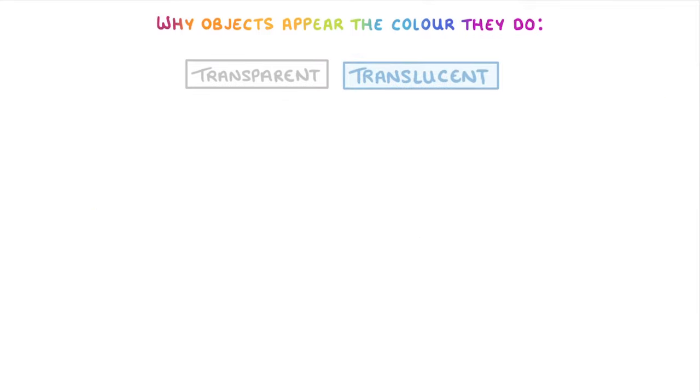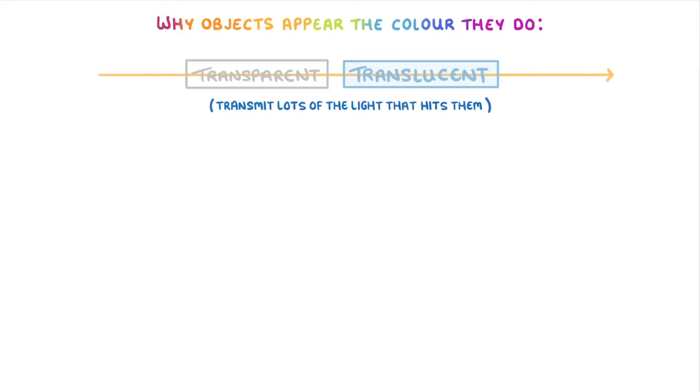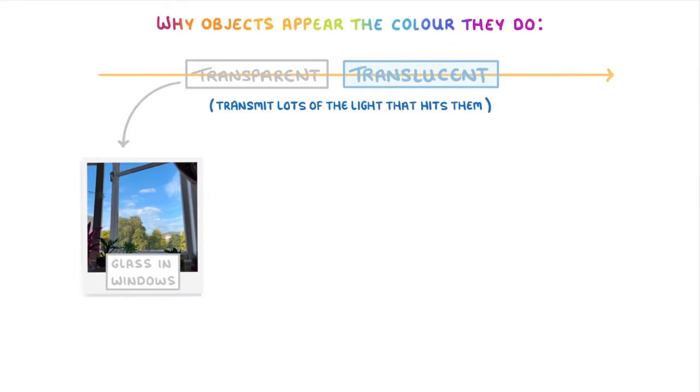Transparent and translucent objects, on the other hand, transmit lots of the light that hits them, which means that it passes straight through. For transparent objects, like the glass in windows, they're almost completely see-through because they transmit nearly all of the light, with only a small fraction being absorbed or reflected.